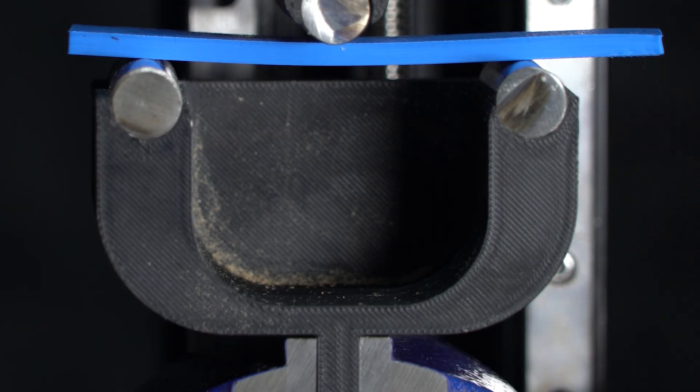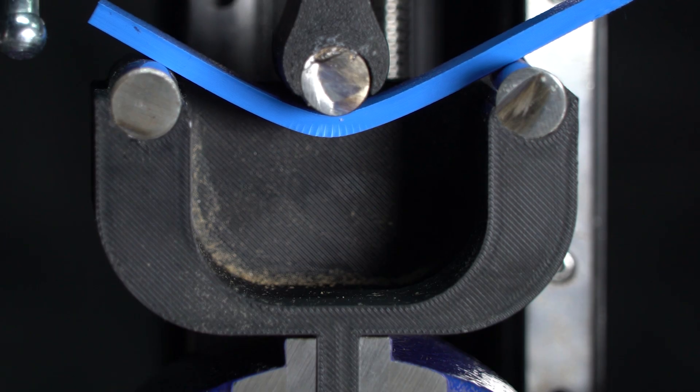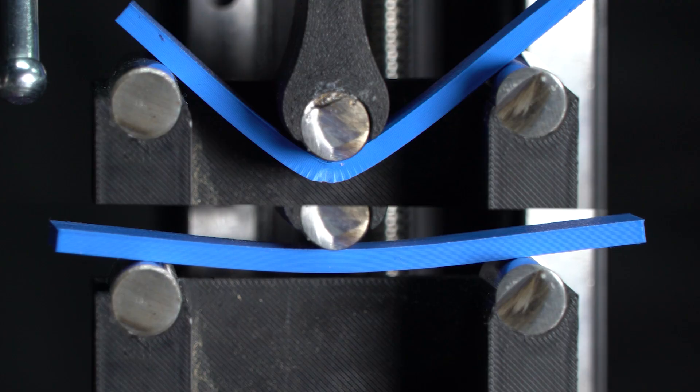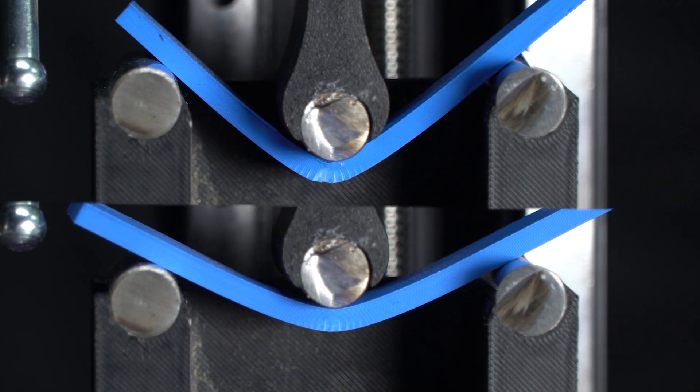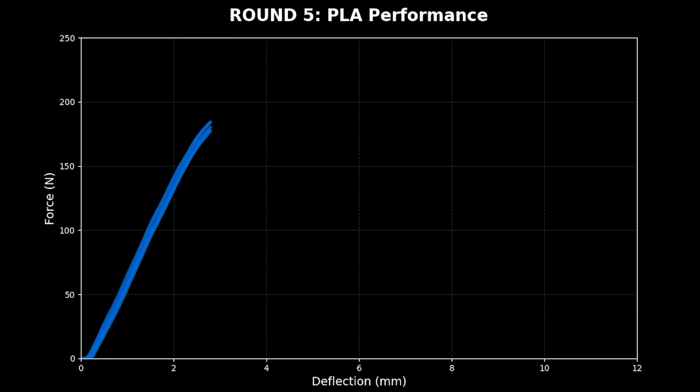And now, PLA. Known for its stiffness, PLA hates bending. It fights back. Look at that steep slope. That is massive resistance.